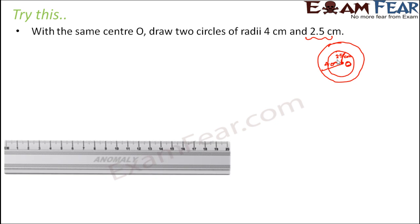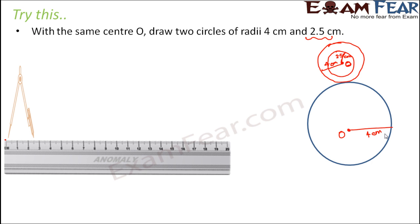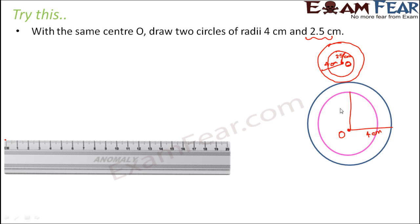So what do we do? Take a ruler and a compass. First measure 4 centimeters — from 0 to 4 on the scale — and with this radius draw the first circle. This point is the center O. You have drawn one circle with radius 4 centimeters. Now for the second circle, use the compass to measure a length of 2.5 centimeters and draw another circle using the same center O. The pink circle drawn has a radius of 2.5 centimeters, and both circles share the same center O.